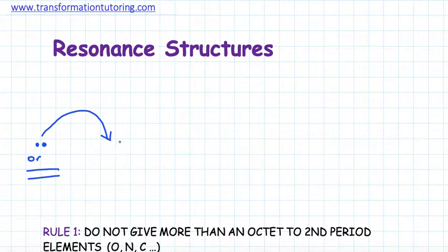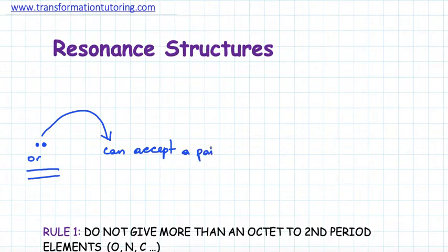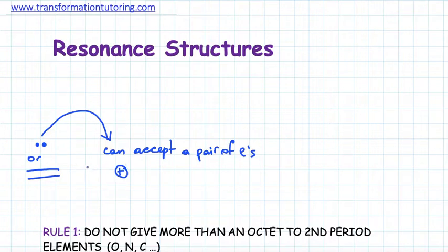The head of the arrow symbolizes a place that can accept a pair of electrons. Something that has a positive charge, for example, doesn't have enough electrons and can accept an extra pair. We will also see that it's not always a positive charge — something can take electrons and then give some of its own electrons away, allowing us to draw multiple arrows.